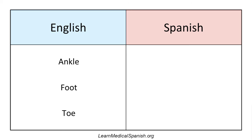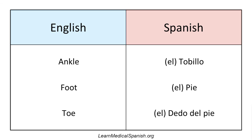Ankle — el tobillo. Foot — el pie. Toe — and you already learned this because it's the same word as finger; finger and toe both sound kind of like digit. El dedo del pie. So if you want to clarify, you say dedo del pie — a digit of the foot means a toe.